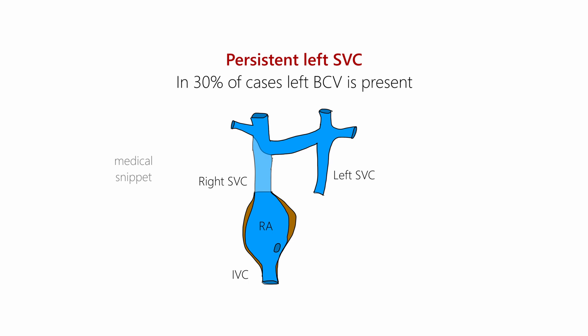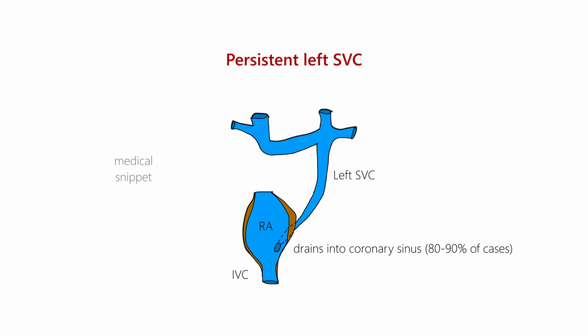Only in 10% of cases is the left superior vena cava seen in isolation, meaning all venous blood from the head and upper limb drains into the heart via the left superior vena cava. The left superior vena cava drains into the coronary sinus in 80–90% of cases. In the remaining 10–20% of cases, it drains into the left atrium, causing a right-to-left shunt.